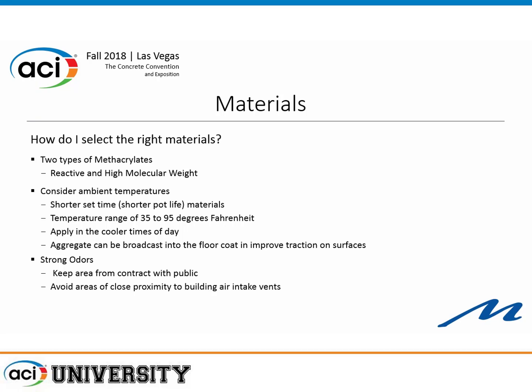There are two types of methacrylates — reactive and high molecular weight. Reactive will get you back on it quicker; high molecular weight is better for structural applications. Think about temperatures when installing this material. Because it sets so quickly, it can flash on you in hot conditions, so it's best to apply during the cooler time of the day. You can install aggregate to improve traction. One of the bigger issues with this material is it has a very strong odor — it smells much like rotten eggs and can be overwhelming.